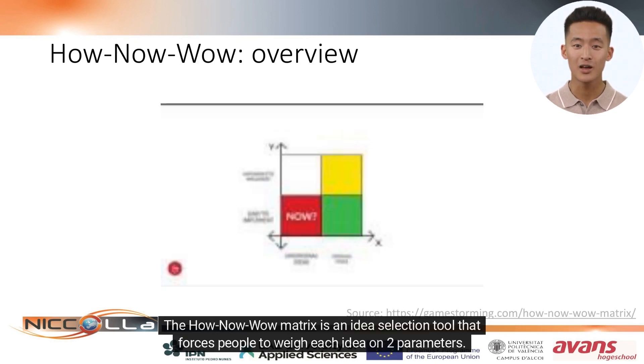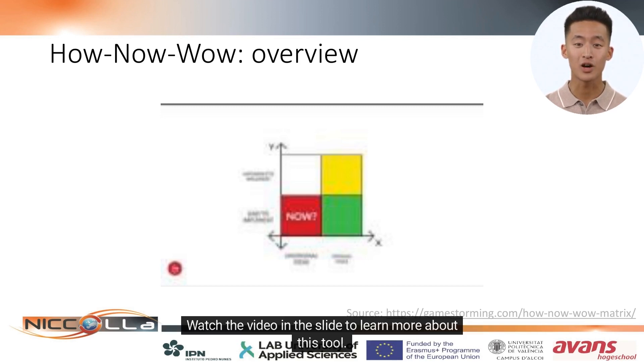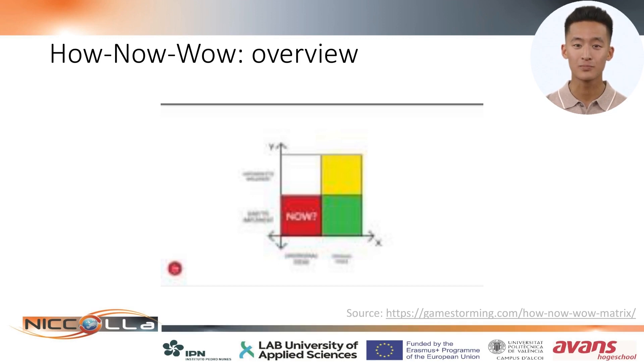The HowNowWow Matrix is an idea selection tool that forces people to weigh each idea on two parameters. Watch the video in the slide to learn more about this tool.